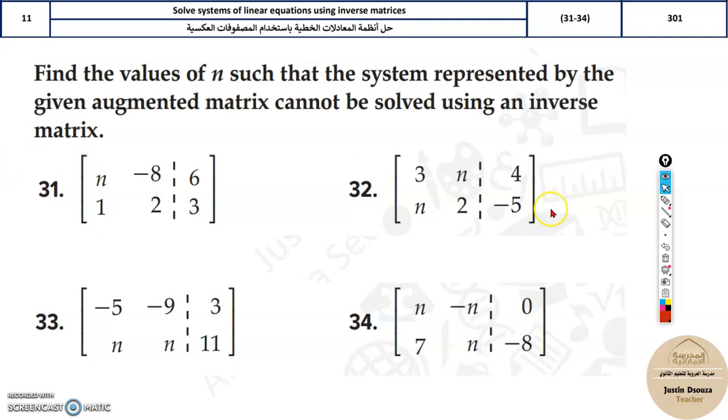So what hint does this give you? If there is no inverse, that means the determinant of the matrix is 0. Once you know the determinant is 0, it's very simple to solve.